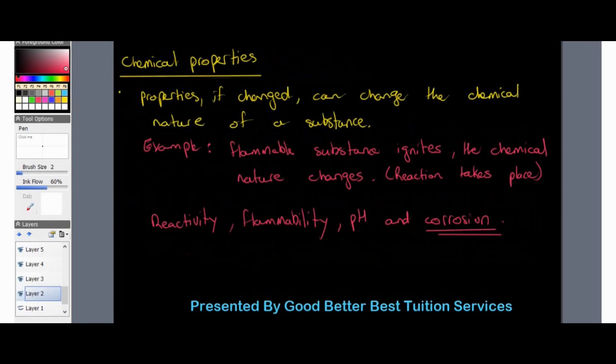Chemical properties of matter are properties that, if changed, can change the chemical nature of the substance, and can result in the development of a new substance. For example, a flammable substance that ignites has incurred a chemical reaction. Another good example is rust or corrosion — a rock eroding in the ocean after years of water smashing against it. The rock becomes thinner and thinner, wearing away, meaning the chemical property of the rock itself has changed.